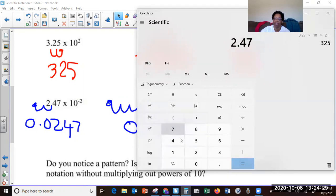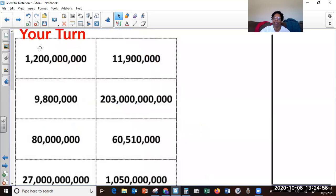2.47 times 10 raised, oh, how do you do this? To the 2 negative. Yes, that's it. Equals. And you see that? 0.0247. 0.0247. So that's how we go from scientific to standard.